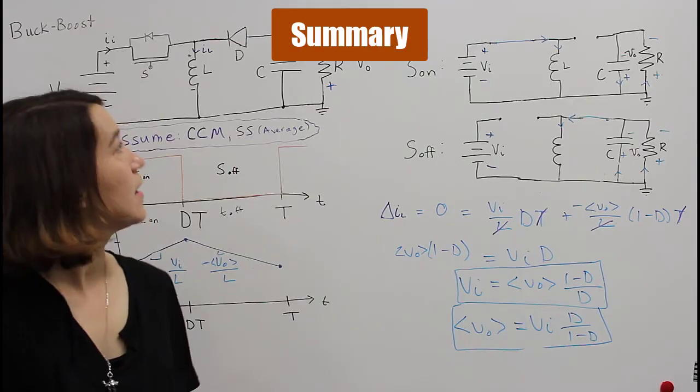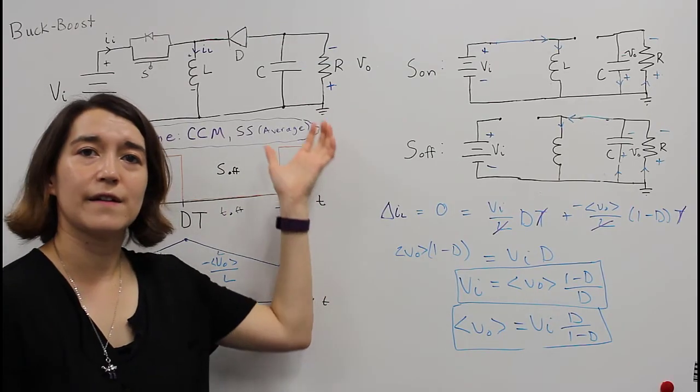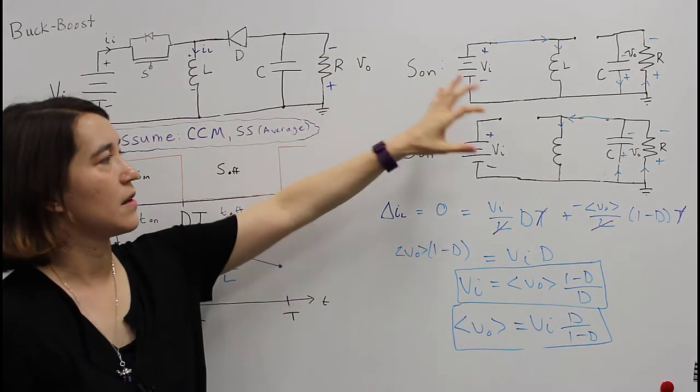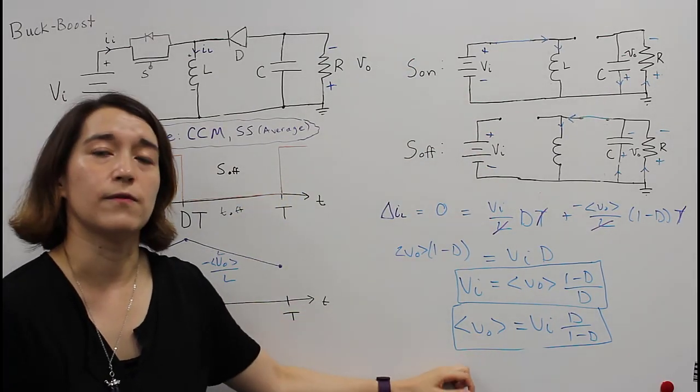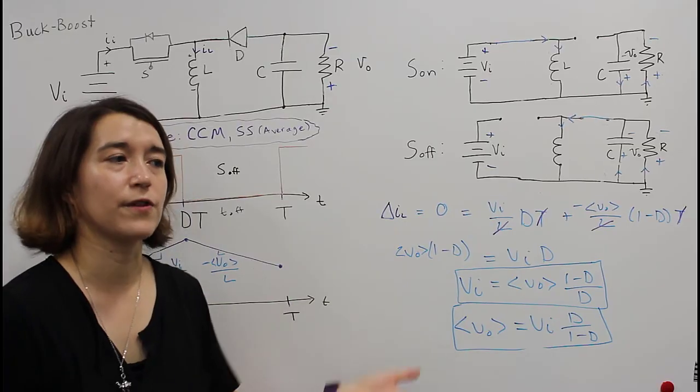Alright, so that's the buck-boost converter, and here's the basic topology. It has the two switching waveforms, and the important part is that the output voltage has a flipped polarity.